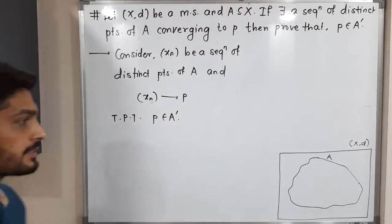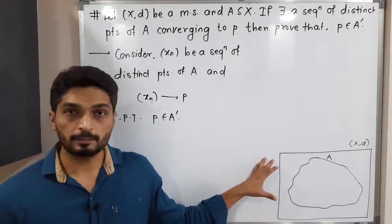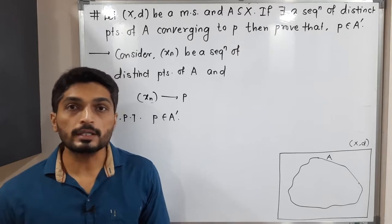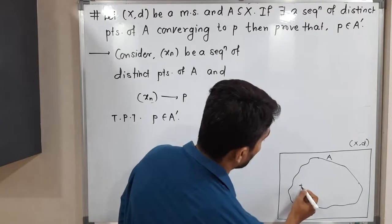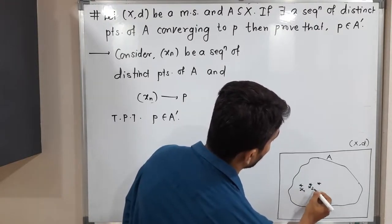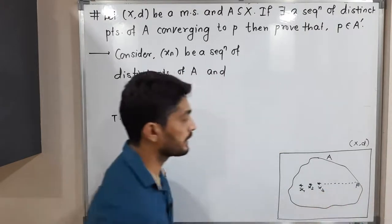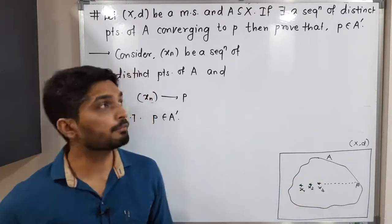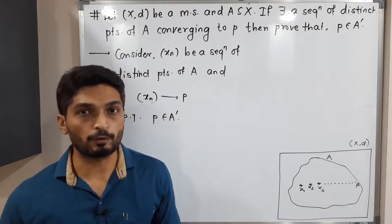Hi everyone, let us discuss this result. So in this result we have a metric space X with distance D, and A is a subset of capital X. They have told us if there exists a sequence — I'm considering here X1, X2, X3 and so on — of distinct points of A converging to a point P, then we have to prove that P belongs to A dash, that means we have to prove that P is a limit point of A.